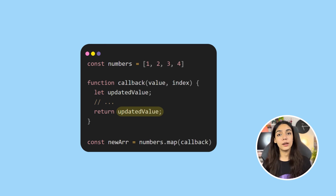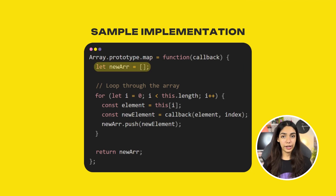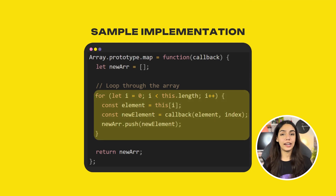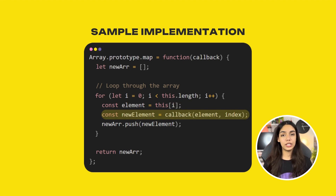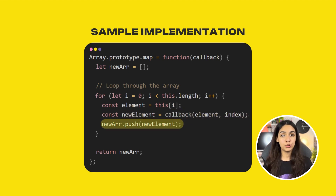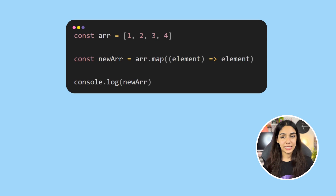Inside the callback you perform some computations and return a new value that should appear in the returned array at that particular index. Here's a simple implementation of the map method: map creates a new array, loops through the array it was called upon, and for every element calls the callback with the element and index. The callback returns a new element which is pushed to the new array.